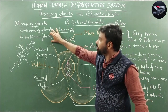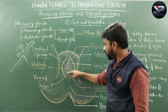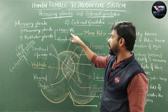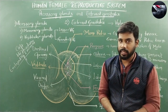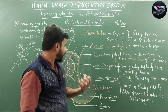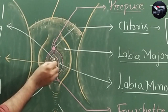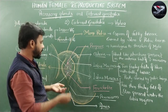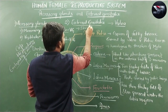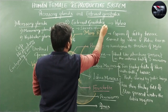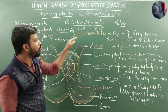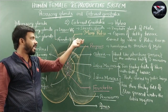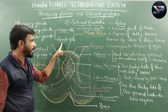The vestibular glands are glands present in the region of the vestibule. There are two types: lesser vestibular glands and greater vestibular glands. The lesser vestibular glands are small numerous glands present around the urethral opening, also called Skene's glands. These Skene's glands are homologous to the prostate gland of the male and are responsible for producing a lubricating fluid.